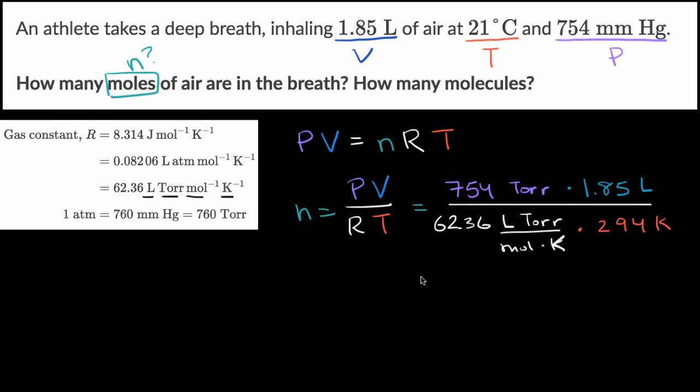And we can validate that the units all work out. This liter cancels out with this liter. This torr cancels out with that torr. This kelvin cancels out with this kelvin. And so we're going to be left with some calculation, and it's essentially just going to simplify to just being a certain number of moles. So let's get our calculator out to figure out the number of moles in that breath.